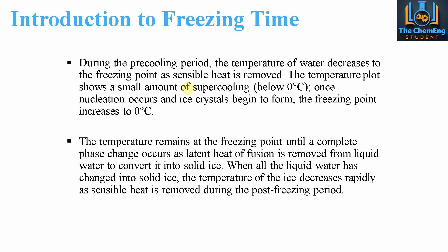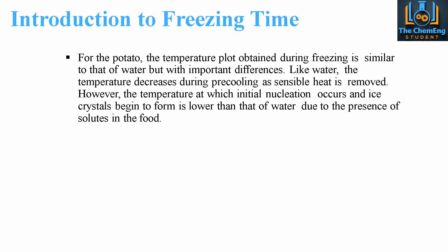During the pre-cooling period, the temperature of the water decreases. We get to the supercooling region below zero. When the crystals start to form through nucleation, we get an increase back to zero degrees. The temperature remains constant during the phase change, where we reduce the latent heat of fusion. When all the liquid has changed into solid ice, we then enter the post-freezing period. For the potato, the temperature plot obtained during freezing is similar; however, there are some subtle differences. Like water, the temperature decreases during pre-cooling as sensible heat is removed.